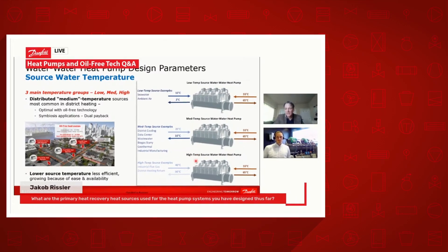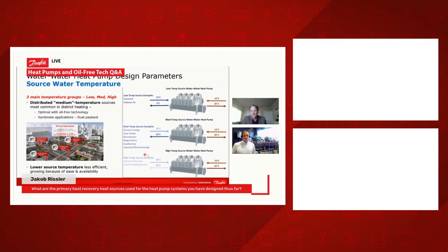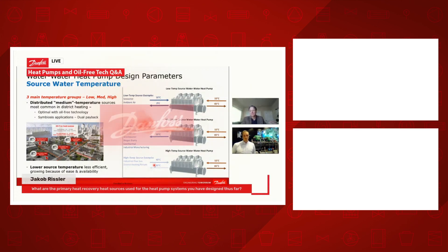To finish it off, industrial flue gas and district heating return — as opposed to district cooling return — are also very good sources for higher temperatures.